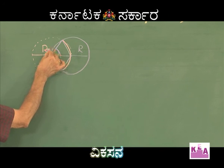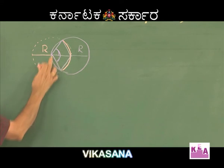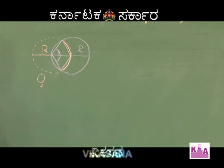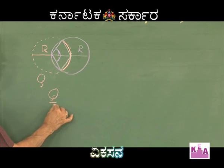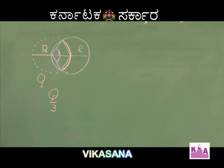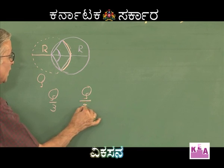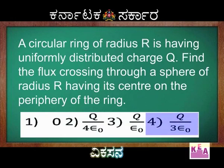For the entire ring, the charge is capital Q. 120 degrees means this portion is one third of the ring. Hence, the charge contained will be equal to Q divided by 3. Therefore, the flux is charge divided by ε₀, that is Q divided by 3ε₀. Therefore, the fourth option is the correct answer.